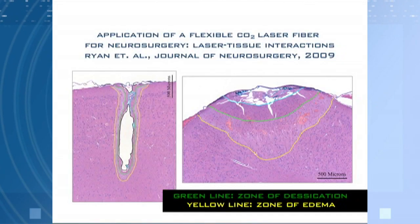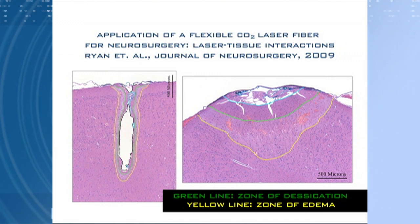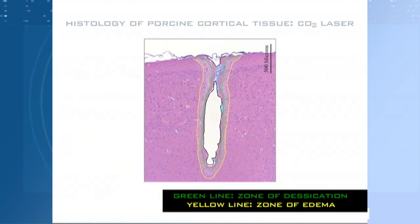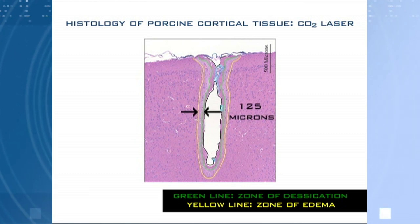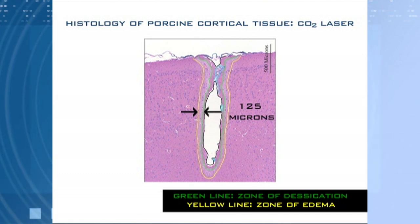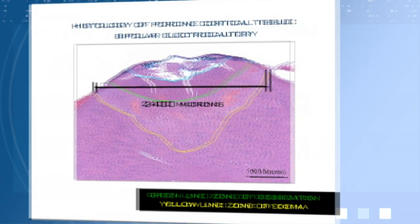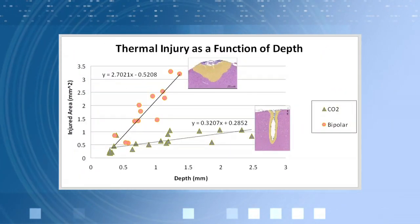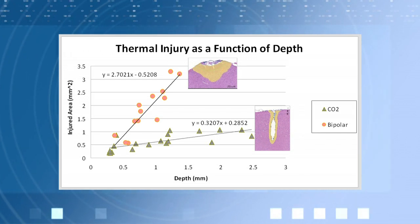This study, performed in 2009 at the Barrow Neurological Institute, assessed the collateral thermal damage associated with the CO2 laser as compared to bipolar electrocautery. Equivalent amounts of CO2 and bipolar energy were applied to porcine cerebral cortex. The thermal damage associated with the CO2 laser, confined to 125 microns of lateral spread, was eight times less than the thermal damage associated with the bipolar. On the horizontal axis is the depth of penetration, determined by power level. On the vertical axis, thermal damage is conveyed as the volume of tissue irradiated by each tool.